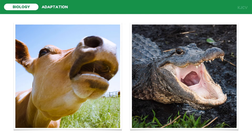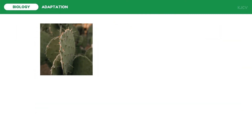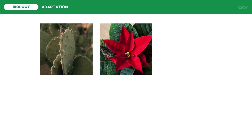Structural adaptations are not only evident in animals — plants also have structural adaptive mechanisms. The spines of cacti such as the prickly pear are actually leaves, used for protection from consumers and for photosynthesis. In poinsettia, or Christmas flowers, the red parts are not actual flowers but modified leaves called bracts, which surround the actual flower and are used to attract pollinators.